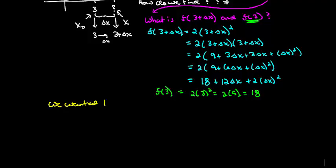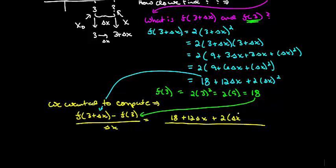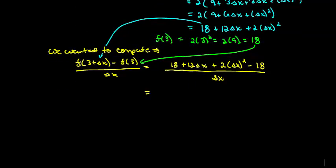So again, remember what we wanted to find. We wanted to compute f at 3 plus delta x minus f at 3 over delta x. Well, we've got some of these values here. We know that this guy right here is f at 3 plus delta x. And we know this guy over here in the green is f at 3. So let's plug those values in since we know they're equivalent. So we get 18 plus 12 delta x plus 2 times delta x squared minus 18 because we have to subtract off f at 3. And of course that's divided by delta x. So what cancels here? Well, the 18's cancel out. And we're left with 12 times delta x plus 2 delta x squared over delta x.